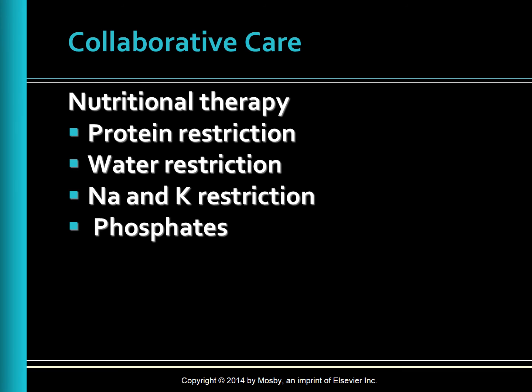Nutritional therapy: calorie-protein malnutrition is a potential and serious problem resulting from altered metabolism, anemia, proteinuria, anorexia, and nausea. For patients undergoing dialysis, protein is not routinely restricted. For CKD stages 1 through 4, many clinicians encourage a diet with normal protein intake. However, high-protein diets and supplements are avoided to prevent overstressing the kidneys.